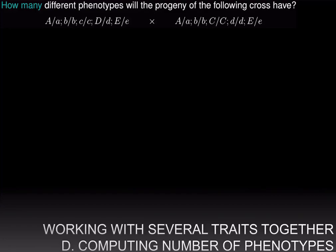Let us attempt a problem in which instead of computing the fraction or frequency of progeny having a particular combination of phenotypes, we have to compute how many different phenotypes the progeny of a particular cross will have. So as before, let us separate out the traits and work out their crosses independently, starting with the second trait first.